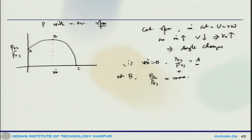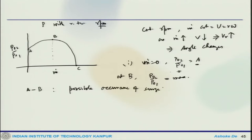In actual practice, point A can be obtained, but most of the curve between points A and B cannot be obtained due to a phenomenon called surge. Between A and B there is a possible occurrence of surge. Most operating situations between A and B — this curve may not be obtained because of the possible occurrence of surge or surging.